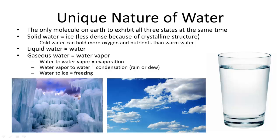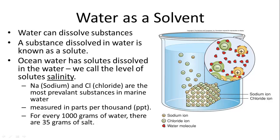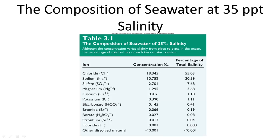Cold water holds more oxygen and nutrients than warm water, making cold water generally more productive. Phase change terms: water to vapor is evaporation, vapor to water is condensation, and water to ice is freezing. As a great solvent, water dissolves many things. Dissolved substances are called solutes, and the amount of dissolved material in water is called salinity.